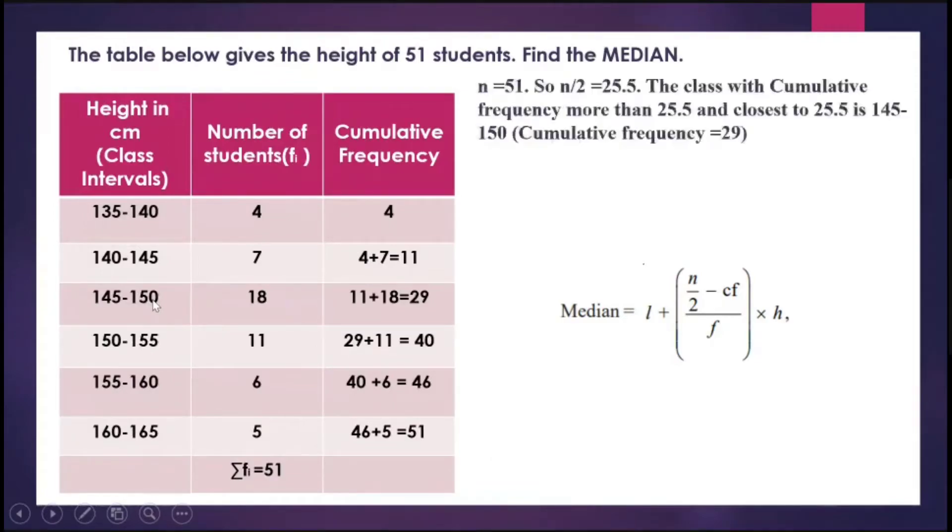I write the median class, which is 145 to 150. So L equals 145 and H equals 5. Then N by 2 is 51 upon 2, which equals 25.5.